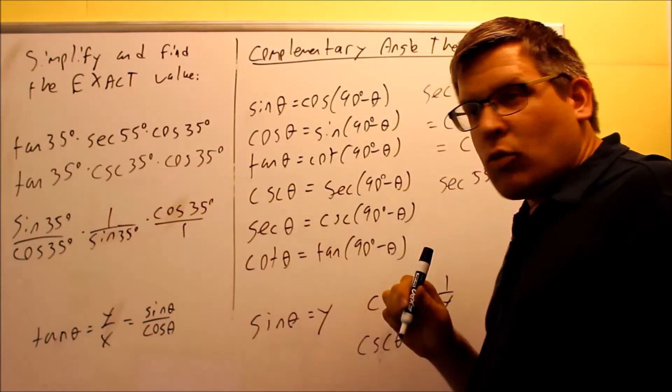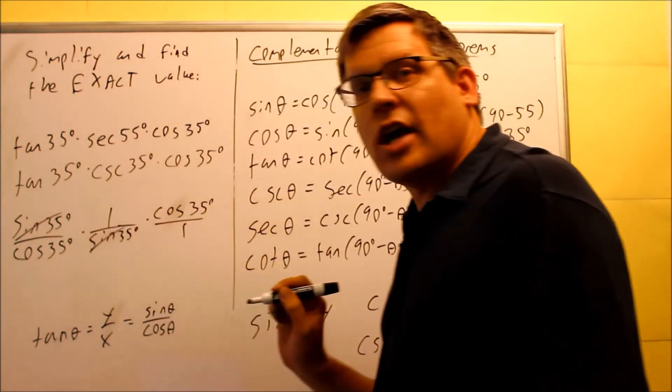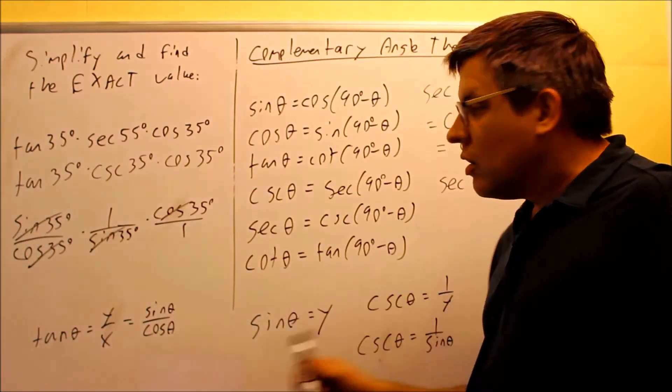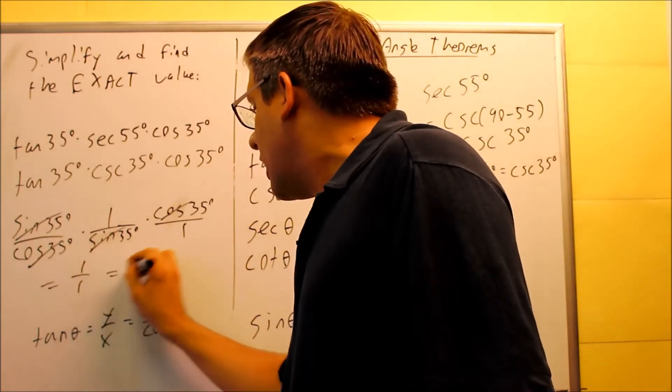Now that I've changed them all into here, what happens is I can actually cancel a bunch of things out. Sine cancels with sine there, cosine and cosine cancel out. I'm left with 1 over 1, so 1 over 1 equals 1.